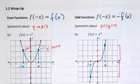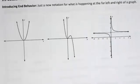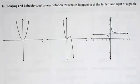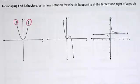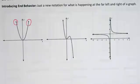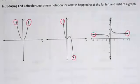We'll also be graphing piecewise defined functions. But first, let's talk about end behavior using limit notation. End behavior means what's happening at the far left and far right of the graph — the arrows at the ends. Can you describe in words what's happening on the far left of a graph?